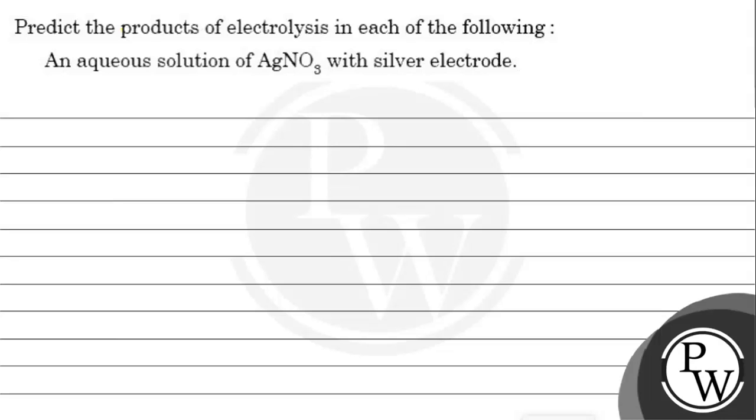Hello children, let's read this question. Predict the products of electrolysis in each of the following: an aqueous solution of AgNO3 with silver electrode.